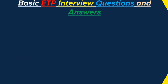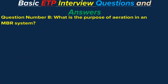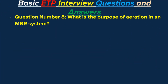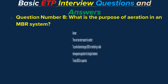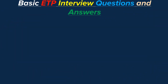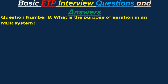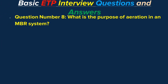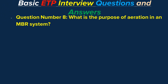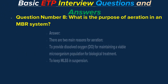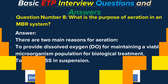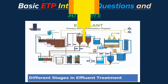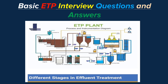Question number 8: What is the purpose of aeration in an MBR system? Answer. There are two main reasons for aeration: first, to provide dissolved oxygen for maintaining a viable microorganism population for biological treatment; and second, to keep MLSS in suspension.